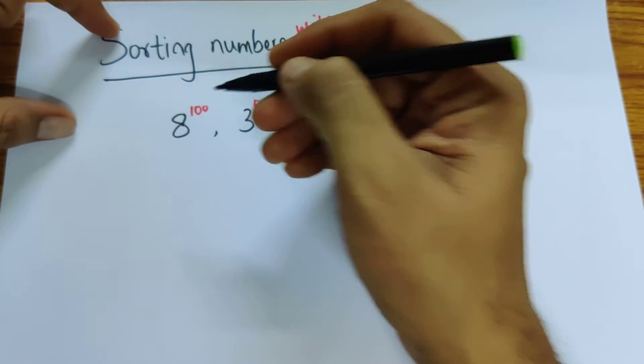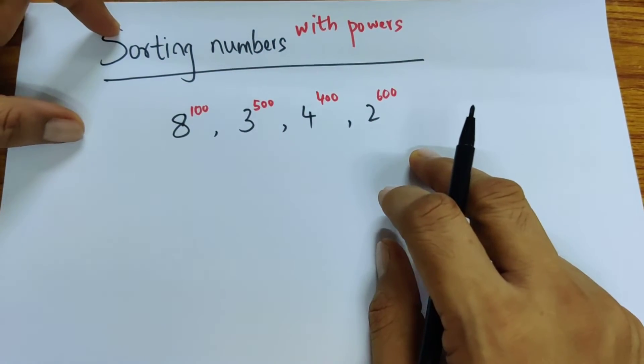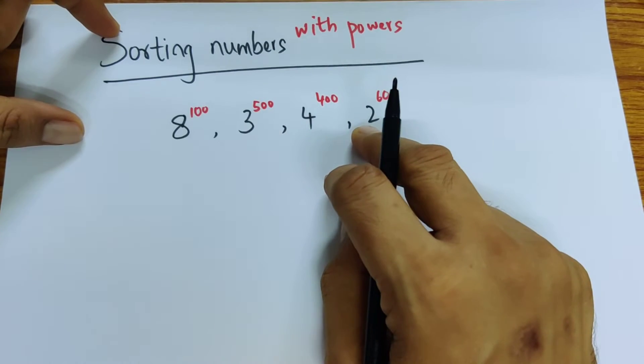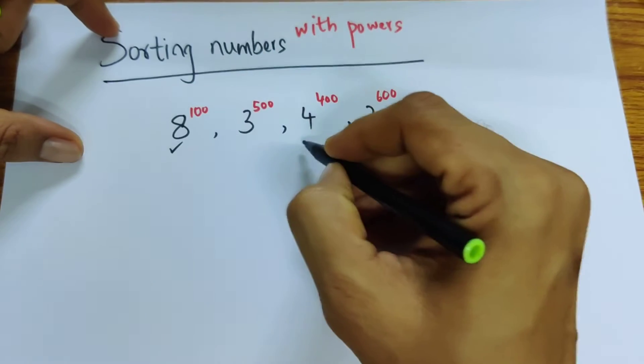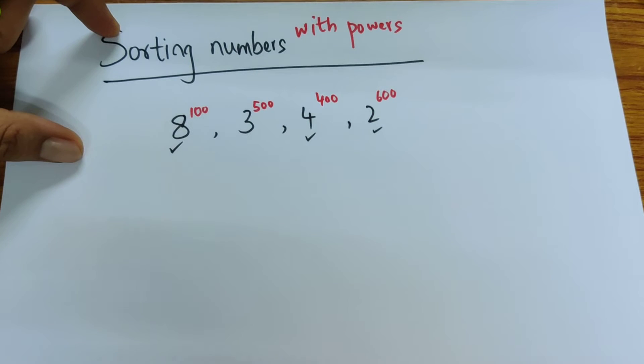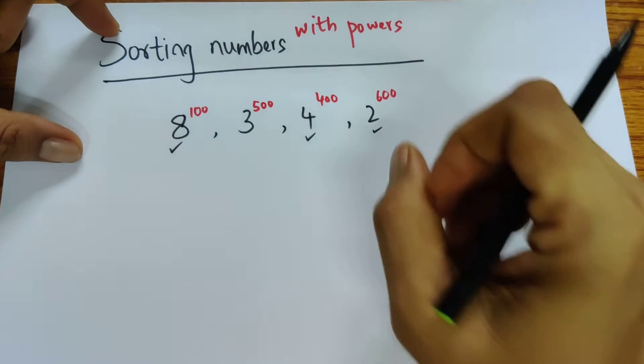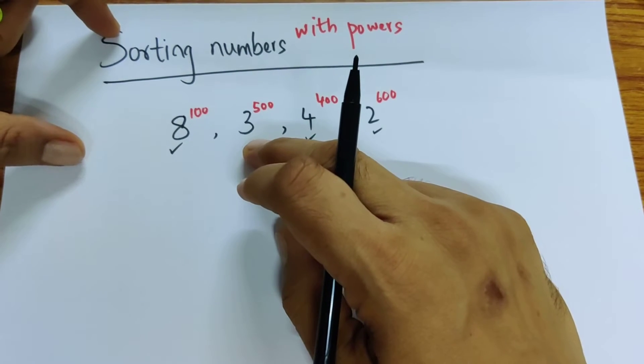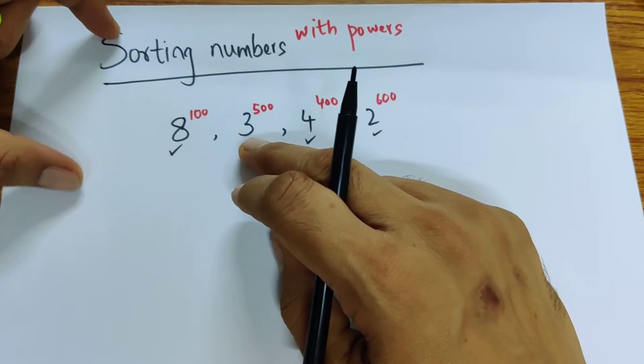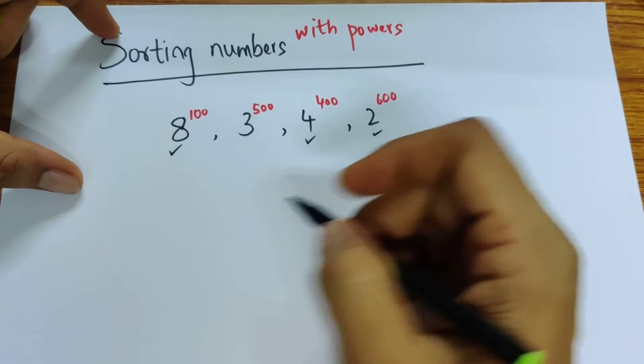The idea is to apply the property of powers. If you want to compare numbers, ideally you need to express them at the same base. This one will work, this one will work, this one will work because they can all be written in terms of 2 to the power of something. This one will not work, so we'll have to see what to do about this. First we'll just do the ones that are easy.